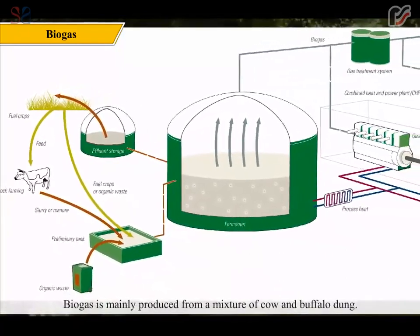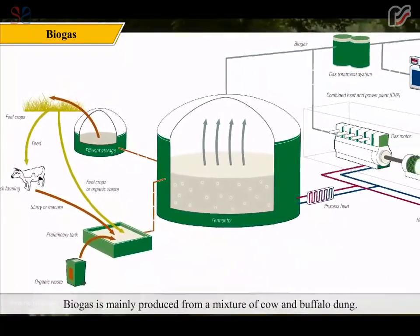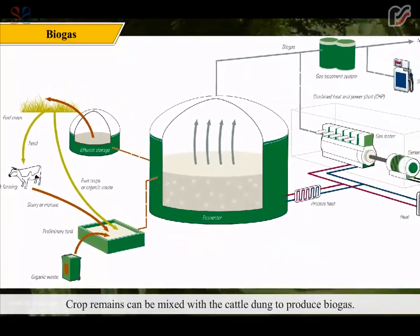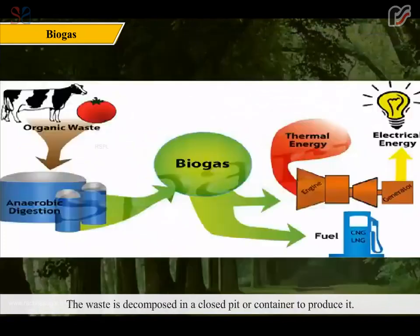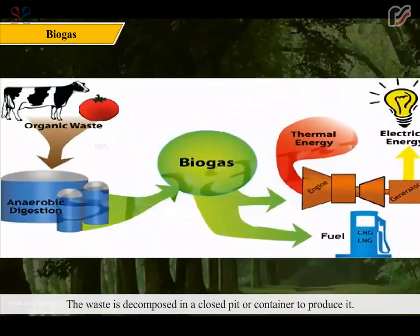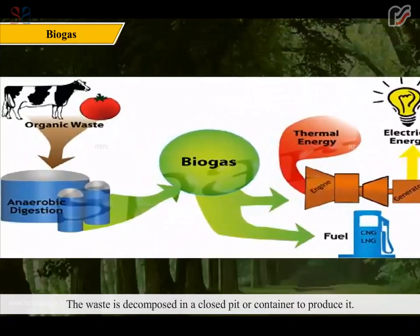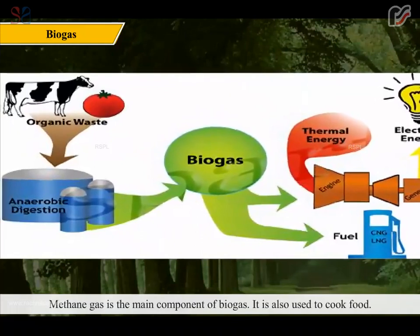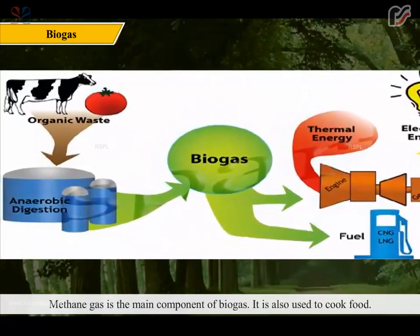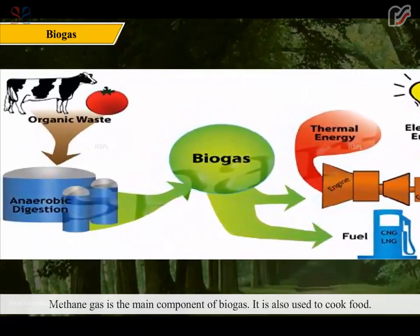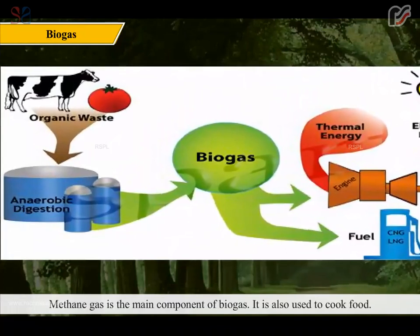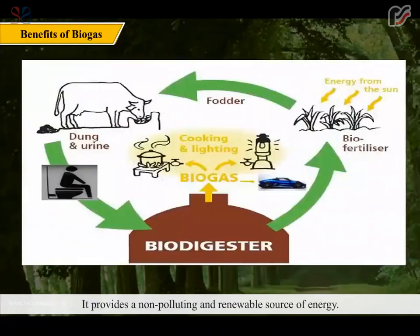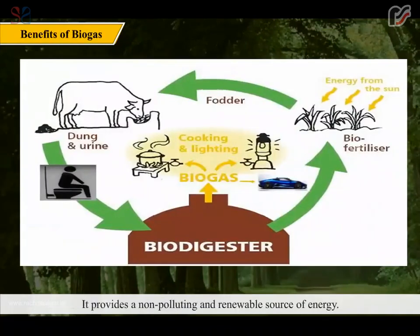Biogas is mainly produced from a mixture of cow and buffalo dung. Crop remains can be mixed with cattle dung to produce biogas. The waste is decomposed in a closed pit or container to produce it. Methane gas is the main component of biogas, and it is also used to cook food.